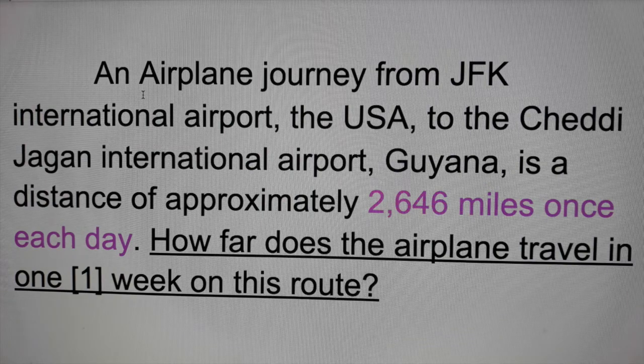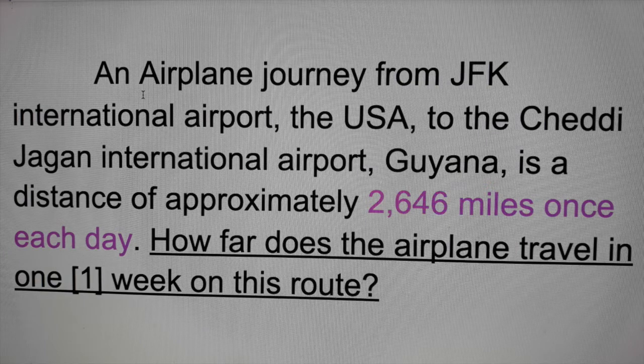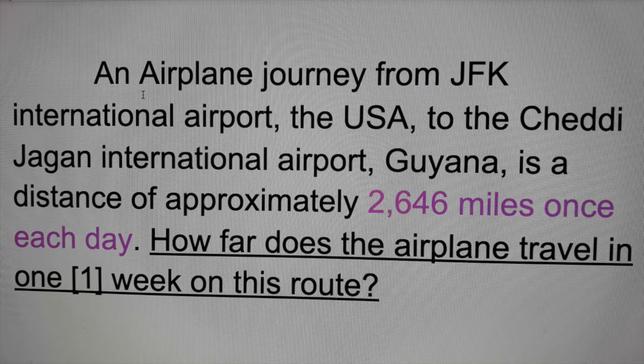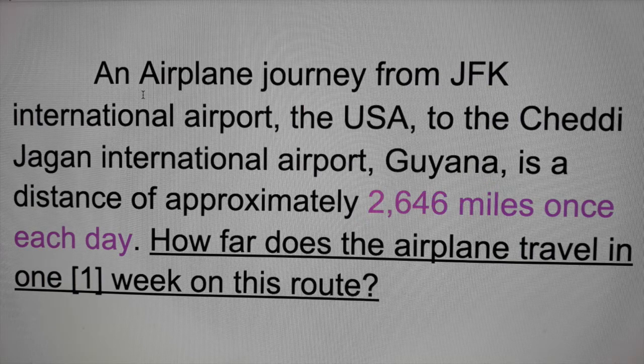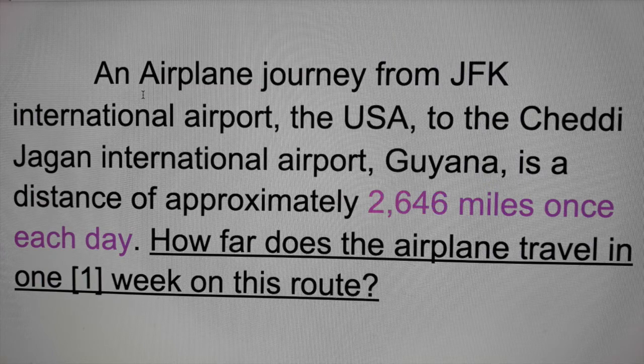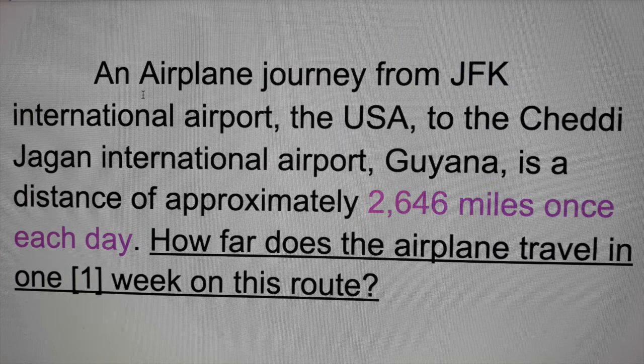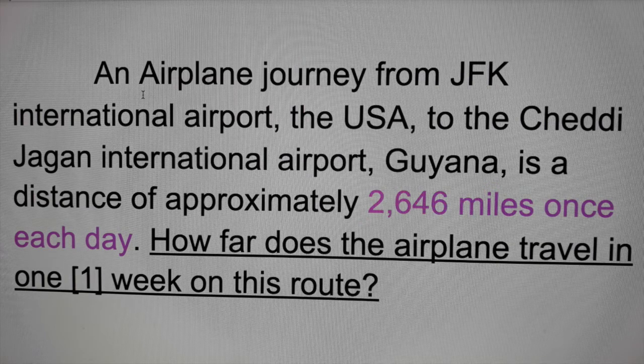An airplane journey from JFK International Airport, the USA, to the Cheddi Jagan International Airport, Guyana, is a distance of approximately 2,646 miles once each day. How far does the airplane travel in one week on this route?